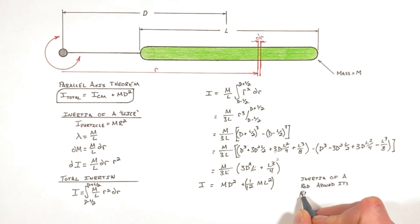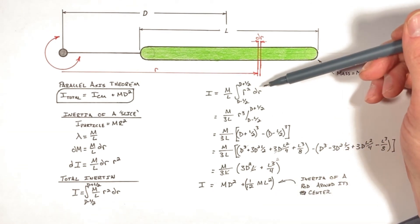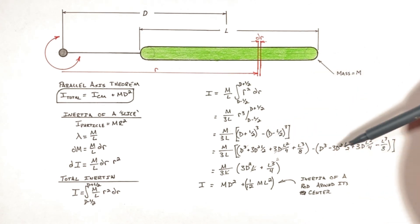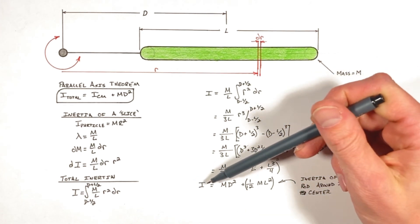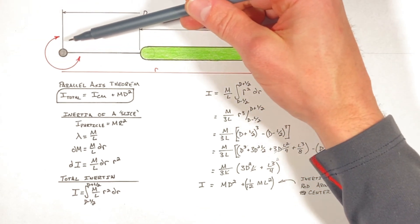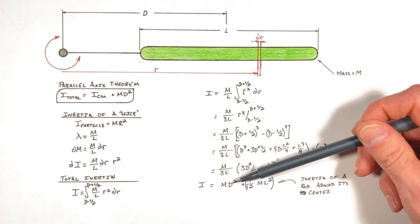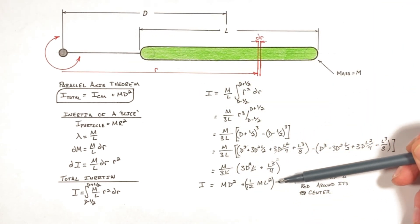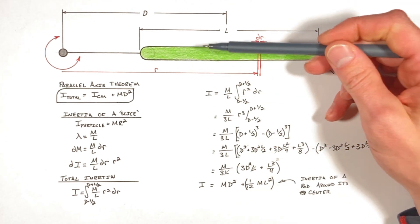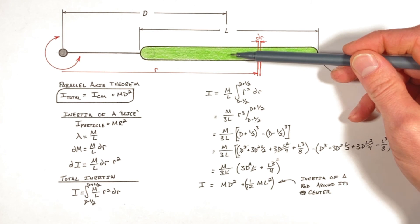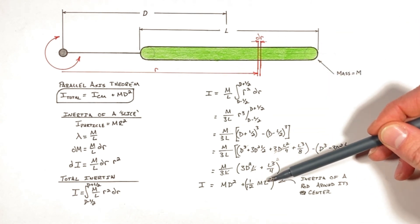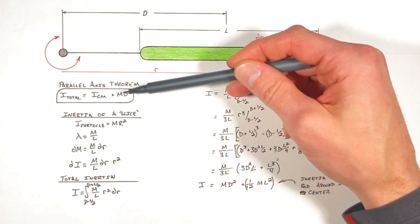Evaluating this integral, and if you're careful through the calculus in dealing with the binomial expansion and the many negatives that show up, what we'll find is the inertia of this rod around this point is md² plus (1/12)ml². Realize that (1/12)ml² is the rotational moment of inertia of a rod around its center. What this has left us with is ultimately the parallel axis theorem.